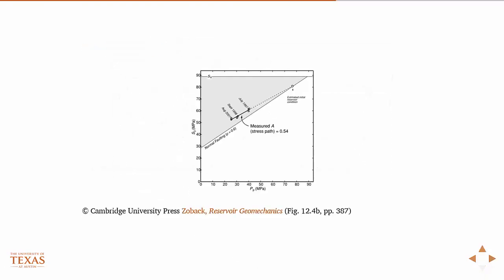If you look at the measured stress path during this time from 97 to 2001 on this reservoir space plot, it looks like this. If you go back to where it was originally brought into production around 80 megapascal in the mid-80s, there wasn't any SH min data back then, so you have to extrapolate this line.